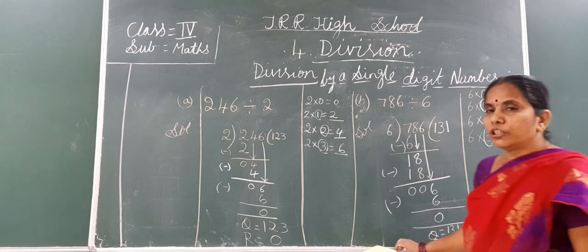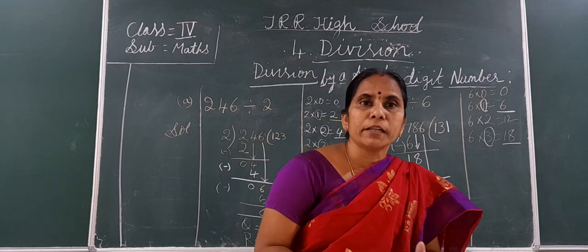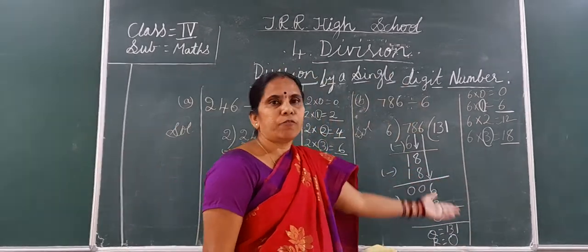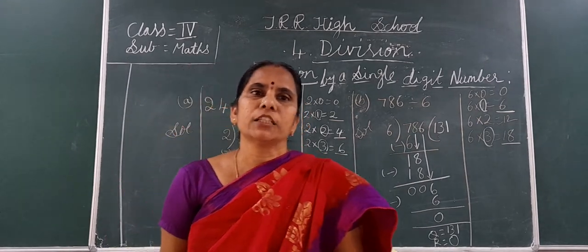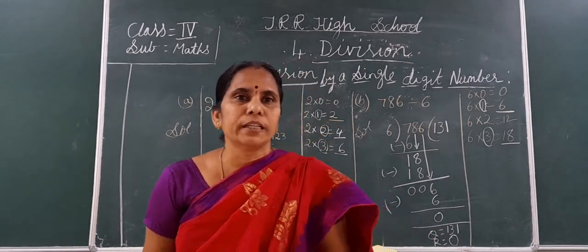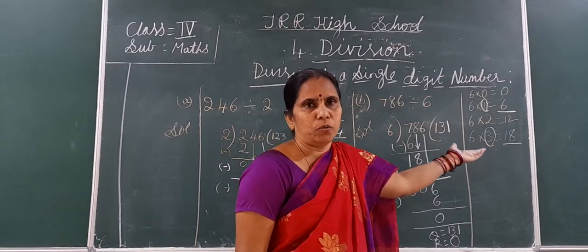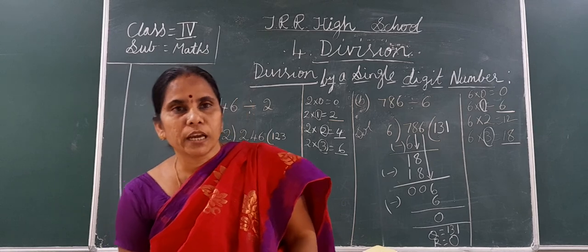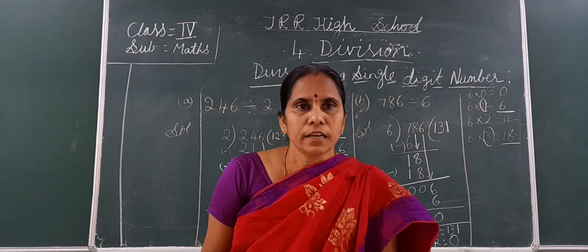I think you all understood this division and how to do it. If you know tables only, you can solve this division. In the rough column also, no need to write the complete multiplication table — only till where you need, write the table that far. With the help of that table, you can solve divisions. Once again I am telling: compulsory all must learn tables. Thank you.